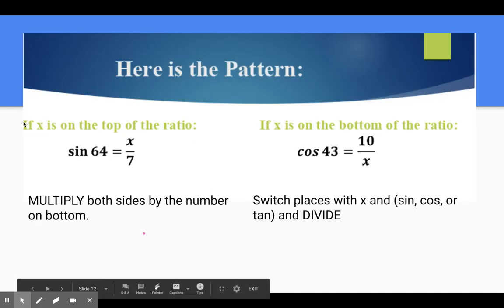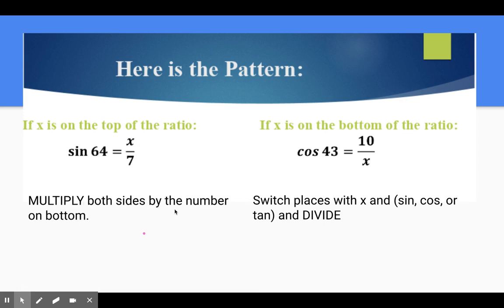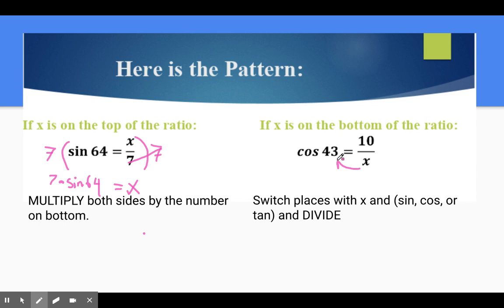Here's the pattern for how we solve. If X is on top of the ratio, we multiply both sides by the number on the bottom. So if we have X over 7, we multiply both sides by 7 — these cancel out and you get X equals 7 times sine 64. If X is on the bottom of the ratio, we switch places with X and the sine, cosine, or tangent. Then we divide: X equals 10 divided by cosine 43.